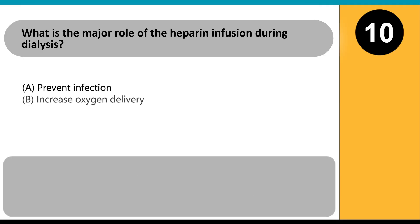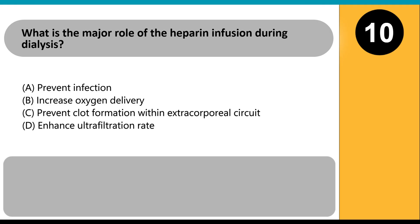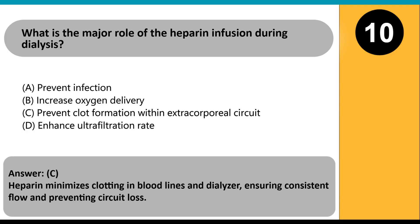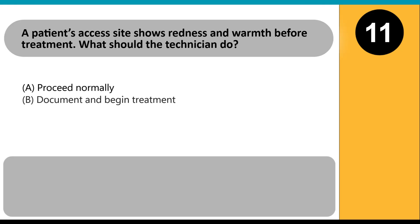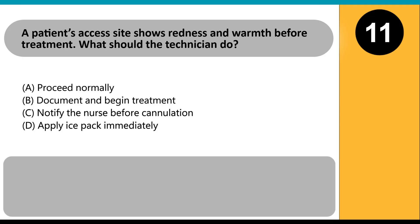What is the major role of the heparin infusion during dialysis? A. Prevent infection. B. Increase oxygen delivery. C. Prevent clot formation within the extracorporeal circuit. D. Enhance ultrafiltration rate. Answer C. Heparin minimizes clotting in bloodlines and dialyzer, ensuring consistent flow and preventing circuit loss.